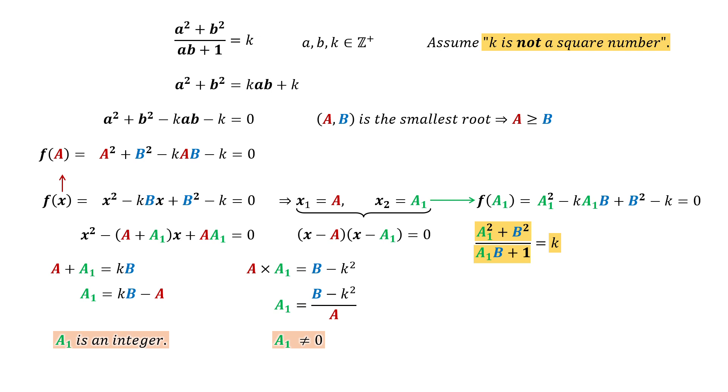Given that B is a positive integer, A1 must be non-negative. Combining these three facts, we conclude that A1 is a positive integer. So A1B is another pair of positive integers for the equation.